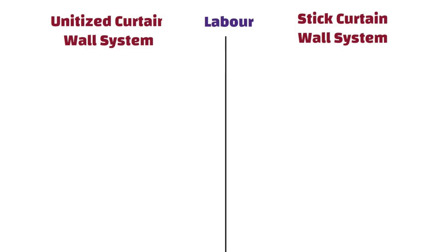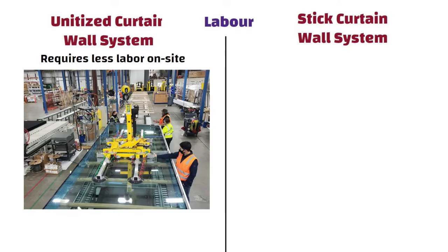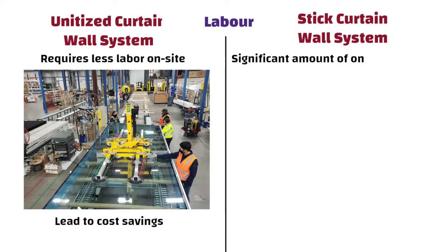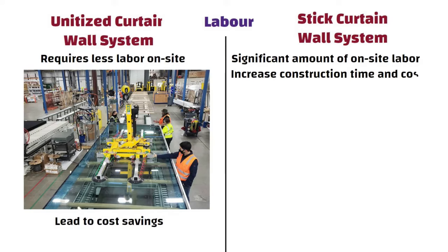Labour: Unitized systems require less labor on site, since most of the assembly is done in the factory, which can lead to cost savings. On the other hand, stick wall systems require a significant amount of on-site labor, which can increase construction time and cost.